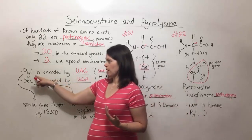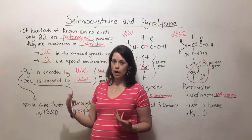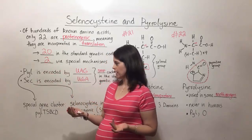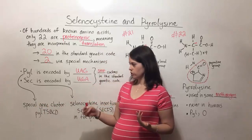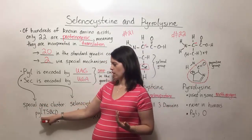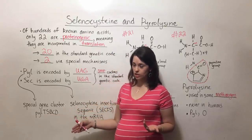So we'll talk about the pyrolysine one first. Organisms that use pyrolysine, like methanogens for example, have a special gene cluster. So this is a grouping of genes. It's called the PYL or PyL-TSBCD gene cluster.